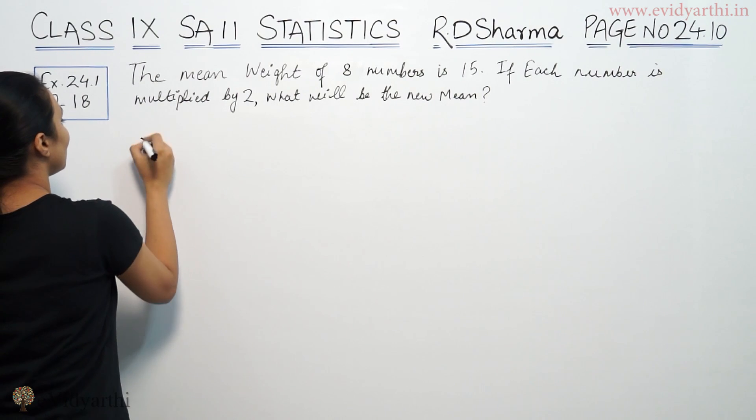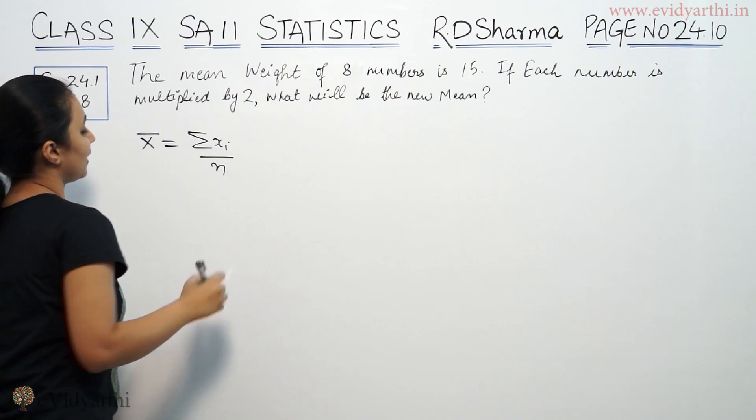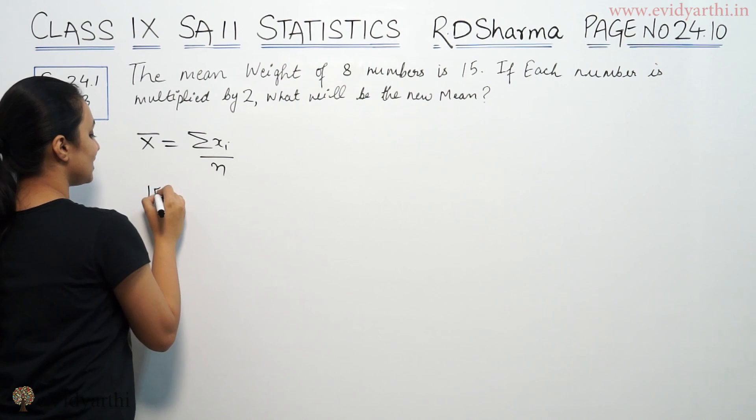First of all, mean is equal to summation xi upon n. Sum of observations upon number of observations. So, mean we have given as 15.